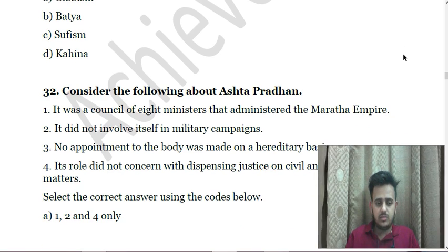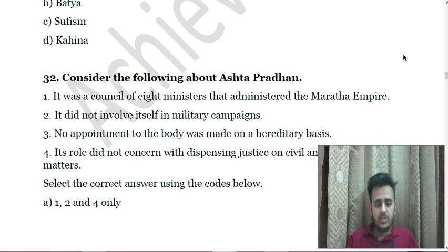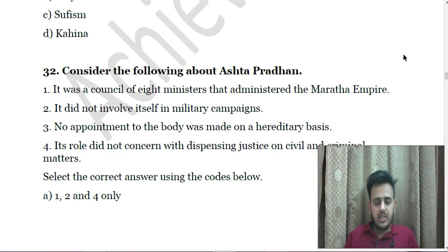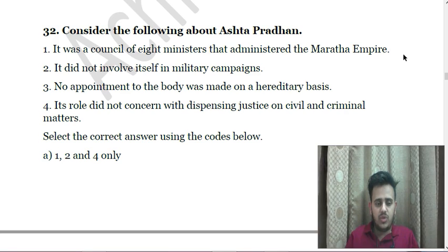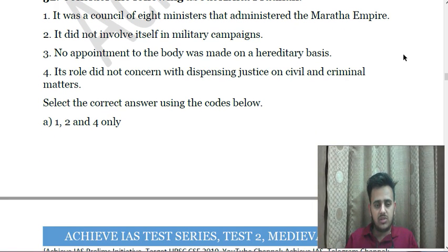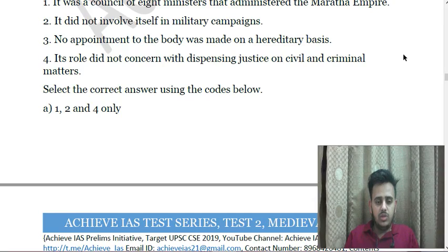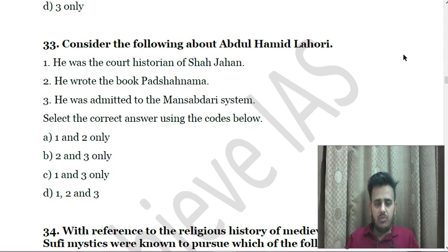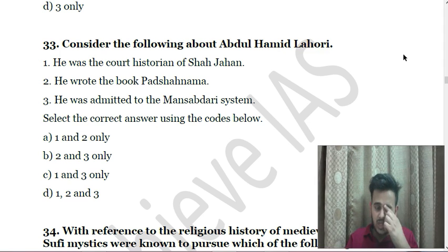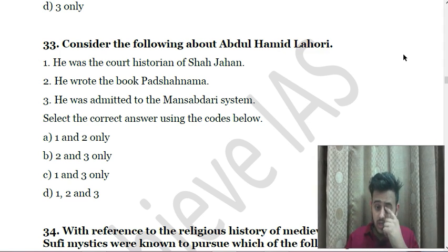Next: Consider the following about Ashta Pradhan — First, it was a council of eight ministers that administered the Maratha Empire; Second, it did not involve itself in military campaigns; Third, no appointment to the body was made on a hereditary basis; Fourth, its roles did not concern dispensing justice on civil and criminal matters. Next: Consider the following about Abdul Hamid Lahori — First, he was the court historian of Shah Jahan; Second, he wrote the book Badshah Nama; Third, he was admitted to the Mansabdari system.